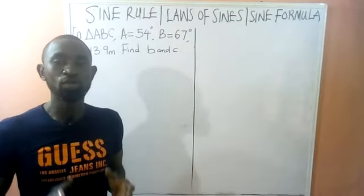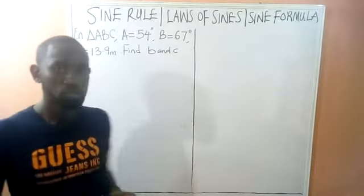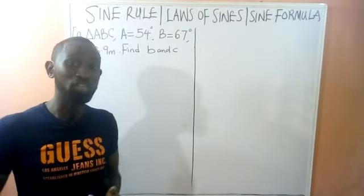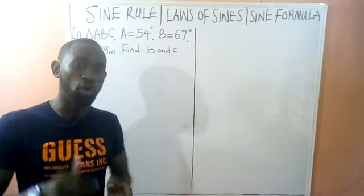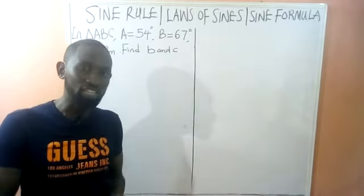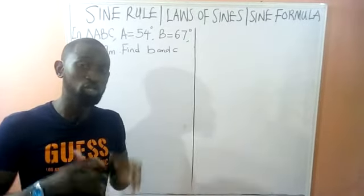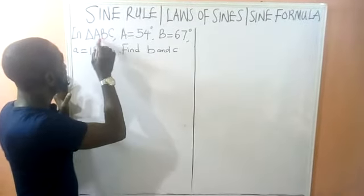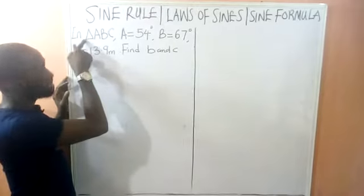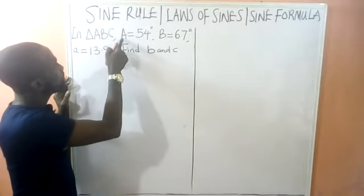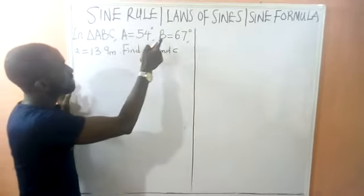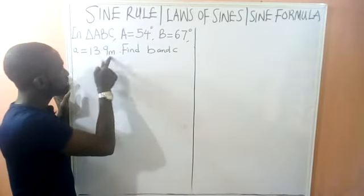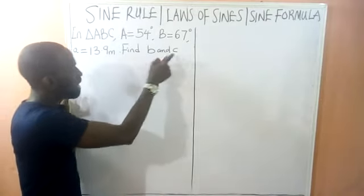In this video we are going to use the sine rule to solve questions. This is the second video under the sine rule — I will put the description of the first video in the description below, so make sure you watch that first. Now, if I give a triangle ABC, capital letter A is 64 degrees, capital letter B is 67 degrees, and small a is 13.9 meters. We need to find b and c.